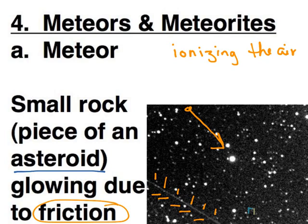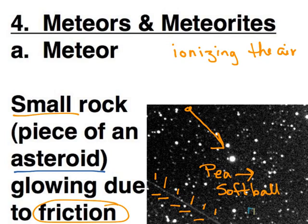The rock sizes vary. Little streaks like this, you're looking at something probably about the size of a pea. Bigger pieces can be closer to like a softball size, and usually those bigger ones will actually hit the ground. The small ones are going to vaporize long before they ever hit the ground.